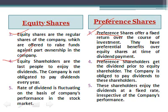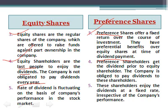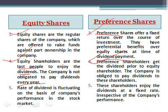Equity shareholders are the last people to enjoy the dividend. The company is not obliged to pay dividend every year to equity shareholders — equity shareholder को dividend मिलेगा यह जरूरी नहीं होता है, company ऐसा commitment देती ही नहीं। On the other hand, preference shareholders get the dividend prior to equity shareholders and the company is obliged to pay dividend to preference shareholders।